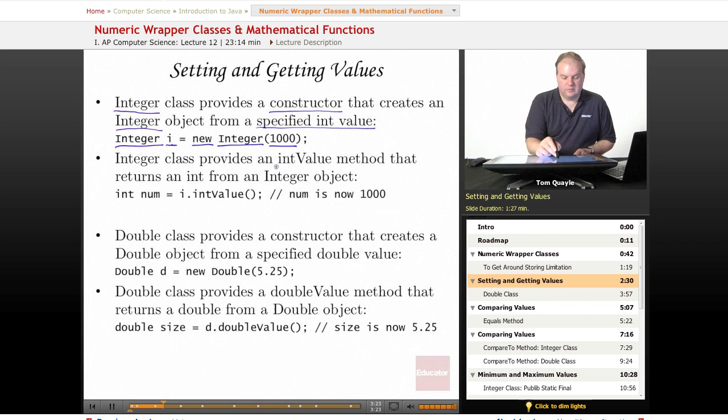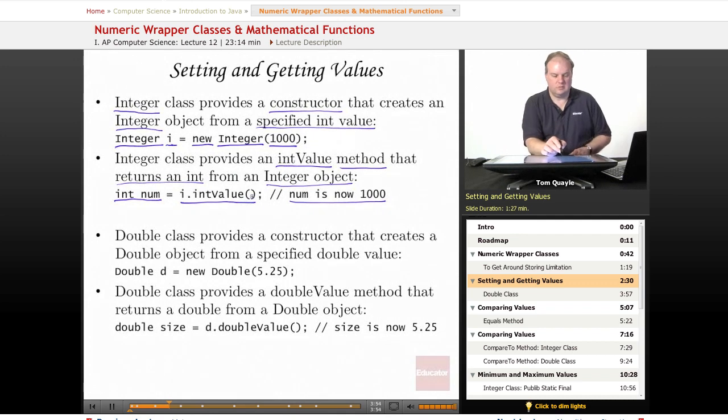The Integer class provides an intValue method that allows us to get an int out of an Integer object. So if I call i.intValue after I have created i with a value of 1000 and assign that value to an int called num, then num now has a value of 1000. So that is how we get int values into and back out of an Integer object of the Integer Wrapper Class.